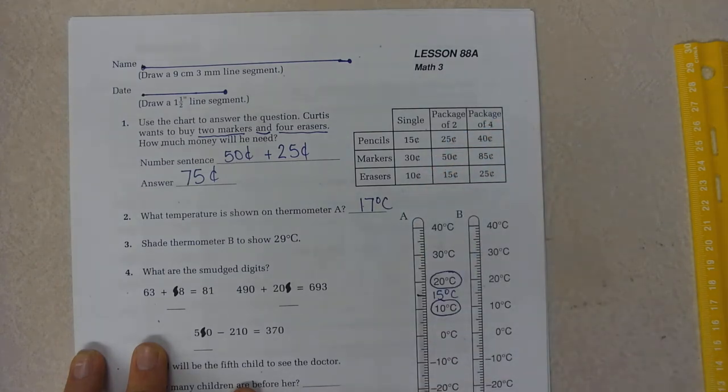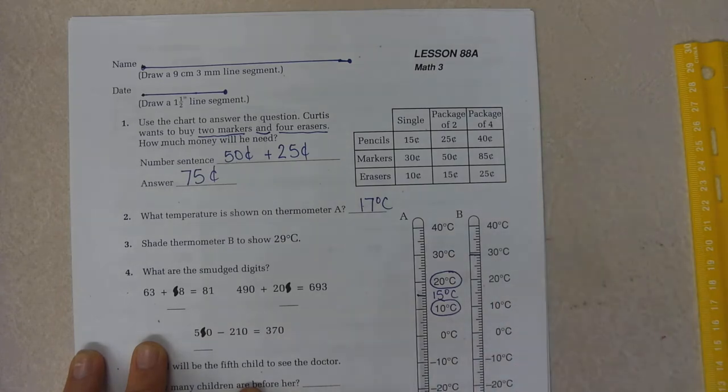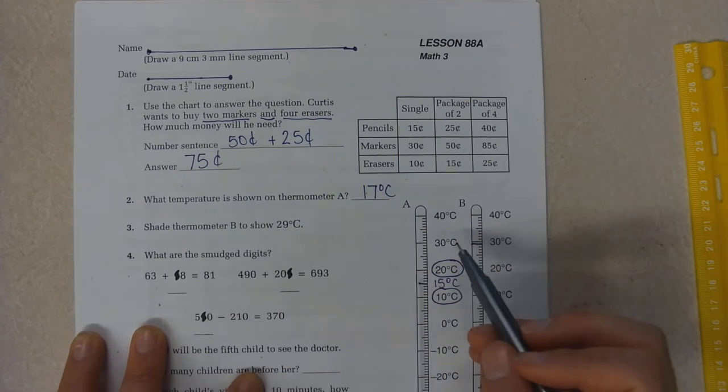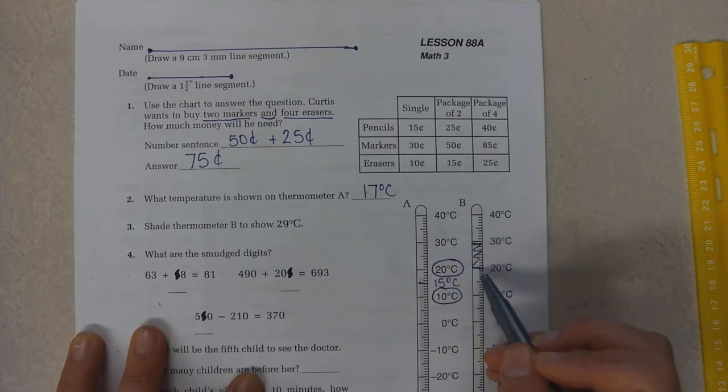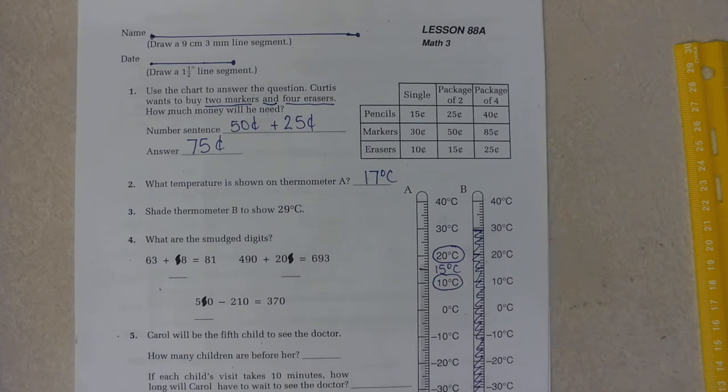Shade the thermometer B to show 29 degrees Celsius. Well, I know 29 is 1 away from 30, so I'm just going to go 1 away from 30. And I just shade it down. And you notice I don't color it in solidly. I like to be able to see what I've shaded.